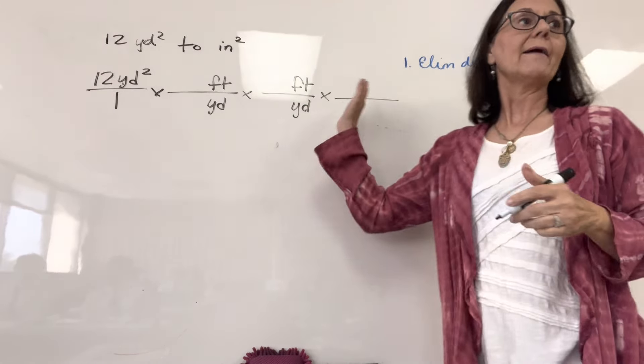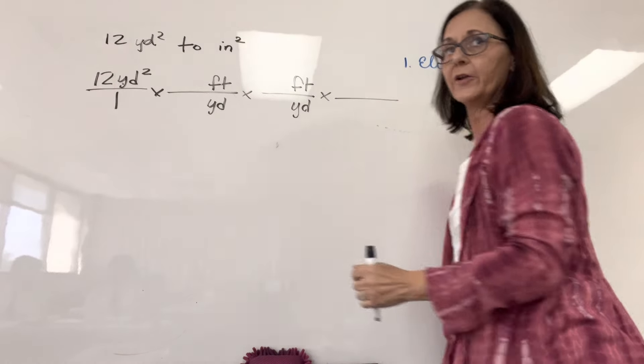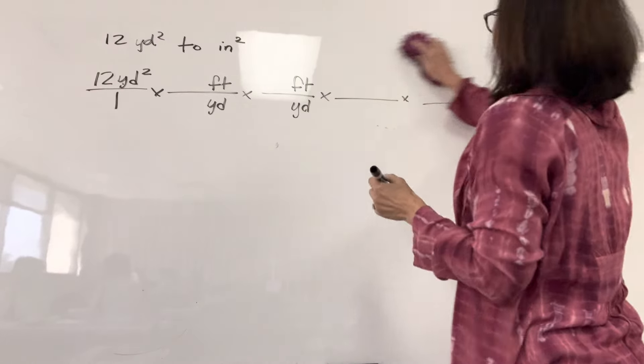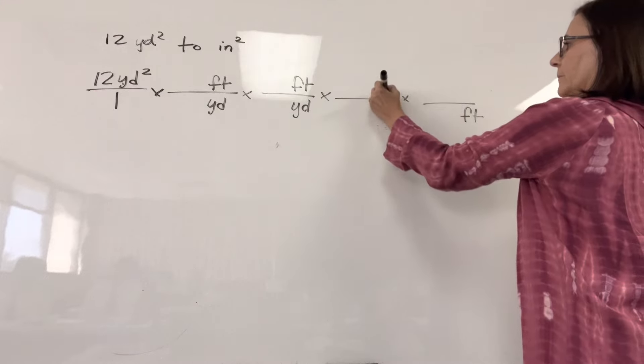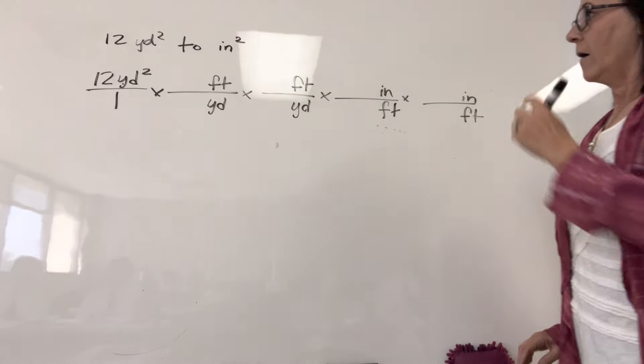Then I, first I'm just going to write what I need, and then I know the conversions, right? So feet are in the numerator twice. So now, I need to get rid of those. So I need feet in the denominator twice, and I'm going to put inches in the numerator. That's a lot of inches.